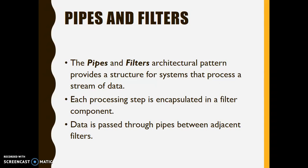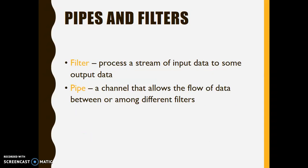The pipes and filters architecture is an example of a data flow architecture. This architecture sees a system as a series of transformations on data. When we talk of pipes and filters as an architecture, we have to be familiar with two terms: filter and pipe. Filter processes a stream of input data to some output data, while pipe serves as a channel which allows the flow of data information for the filter.